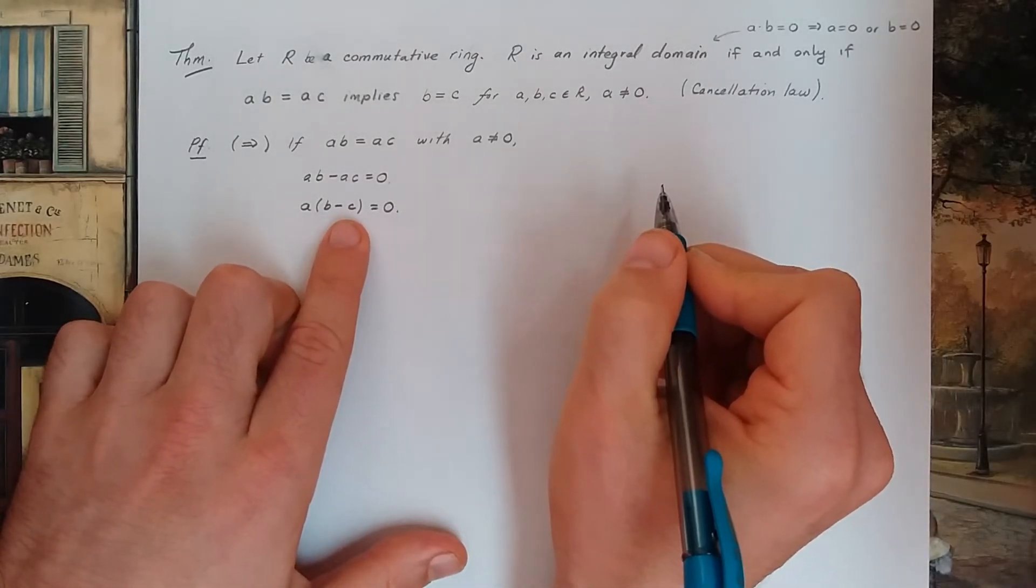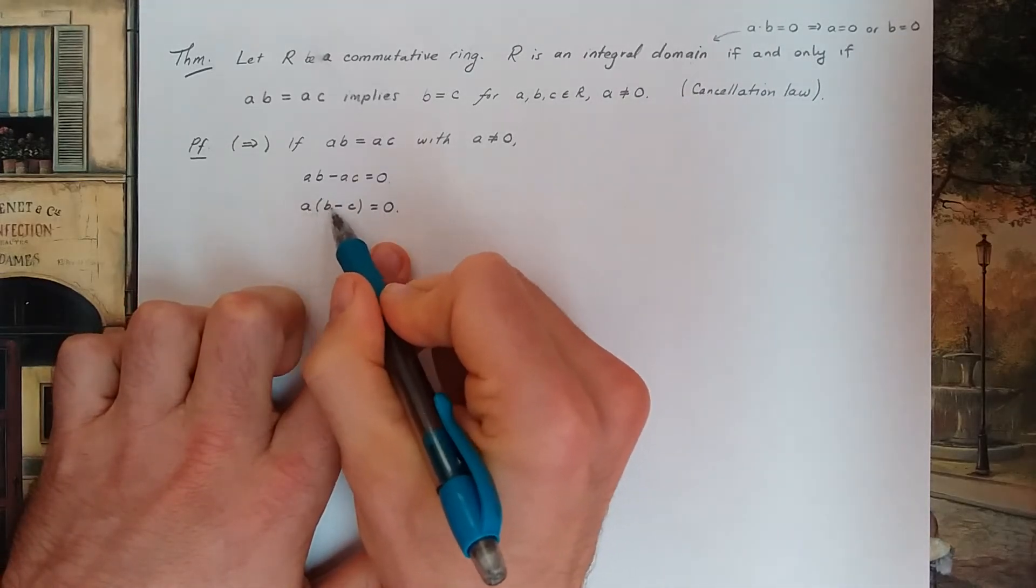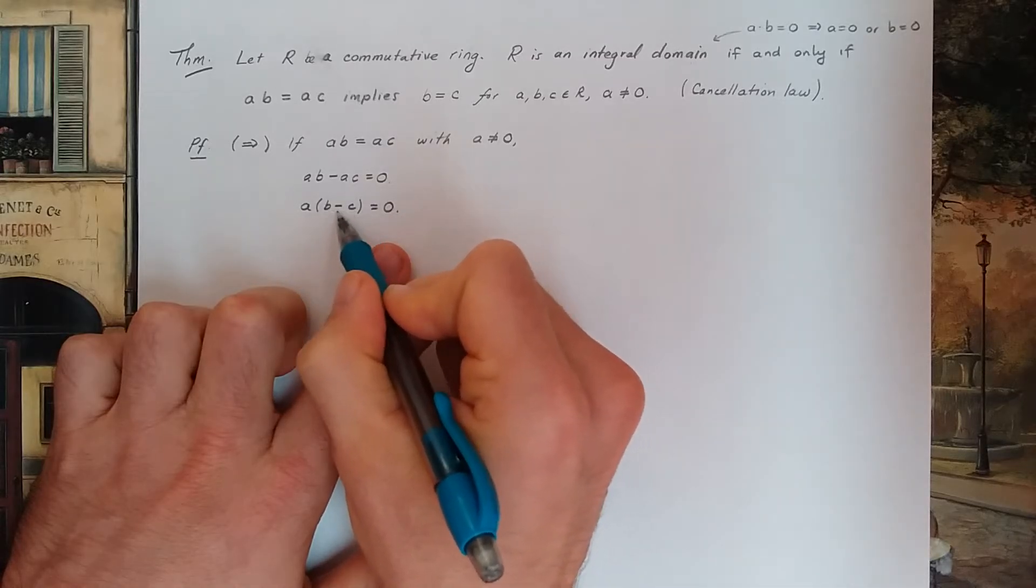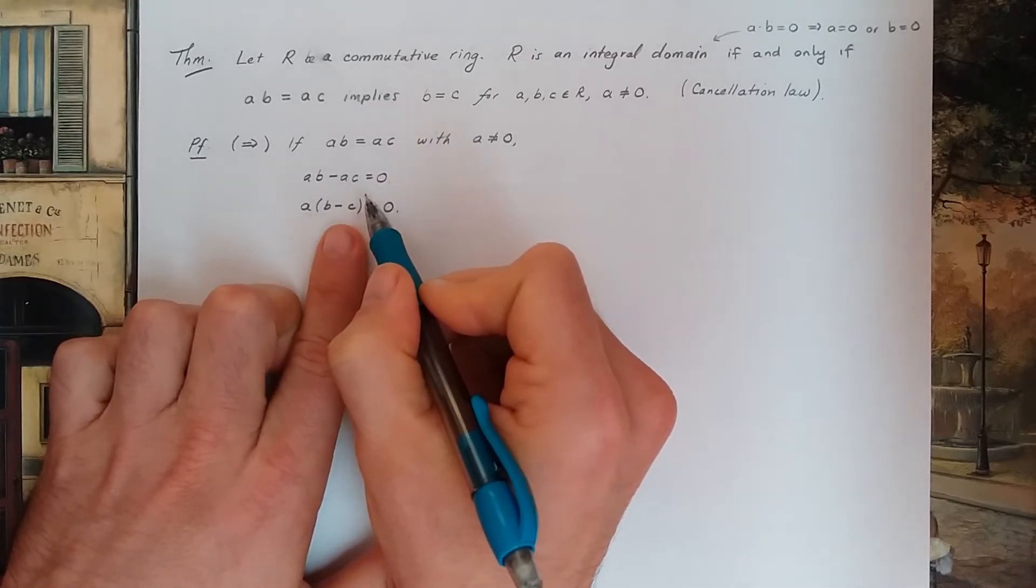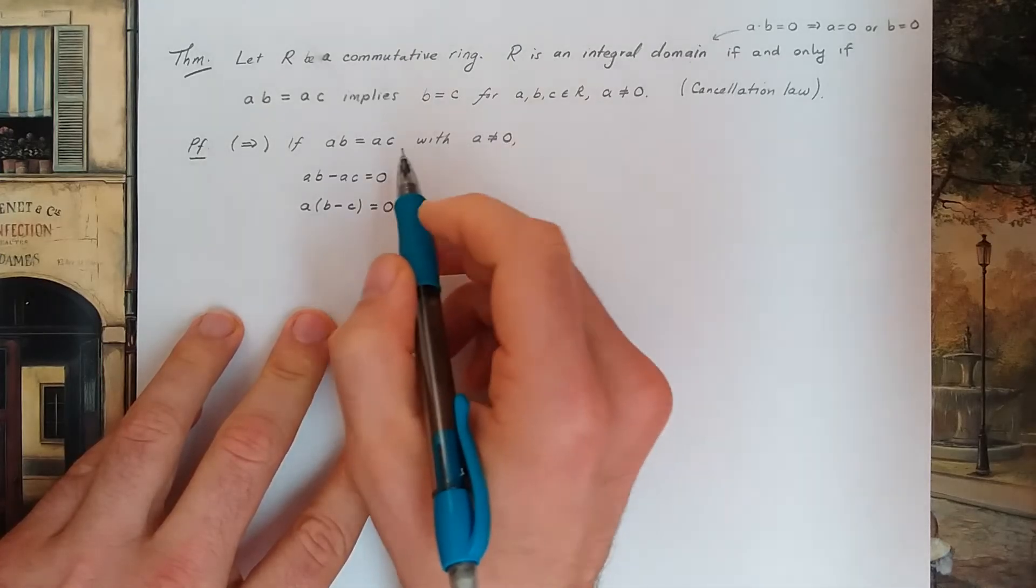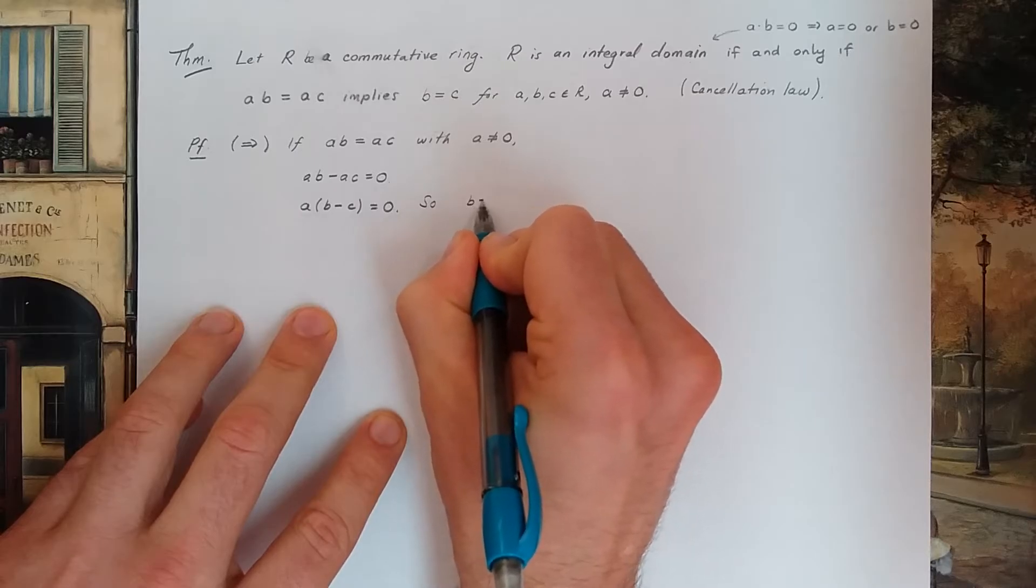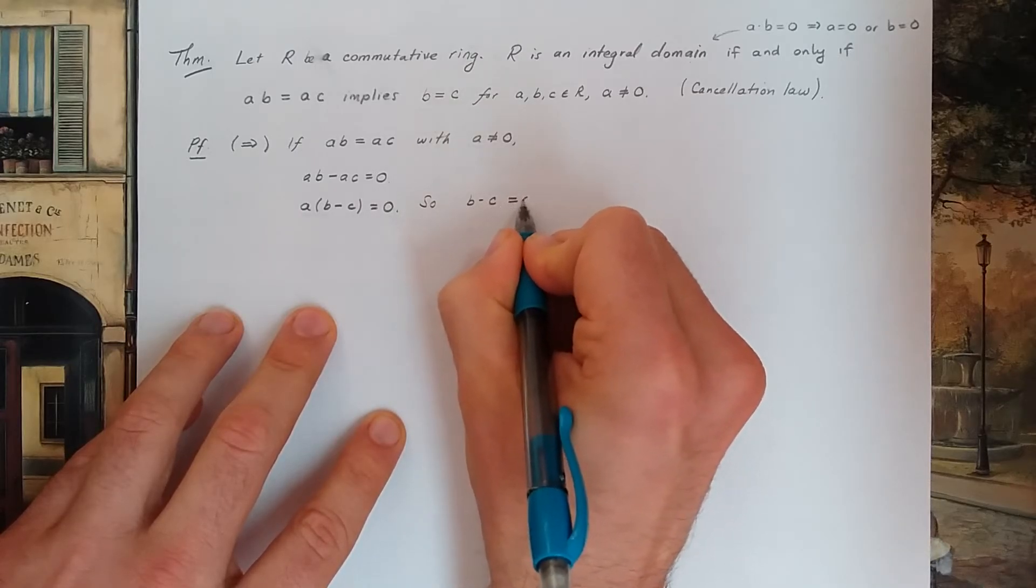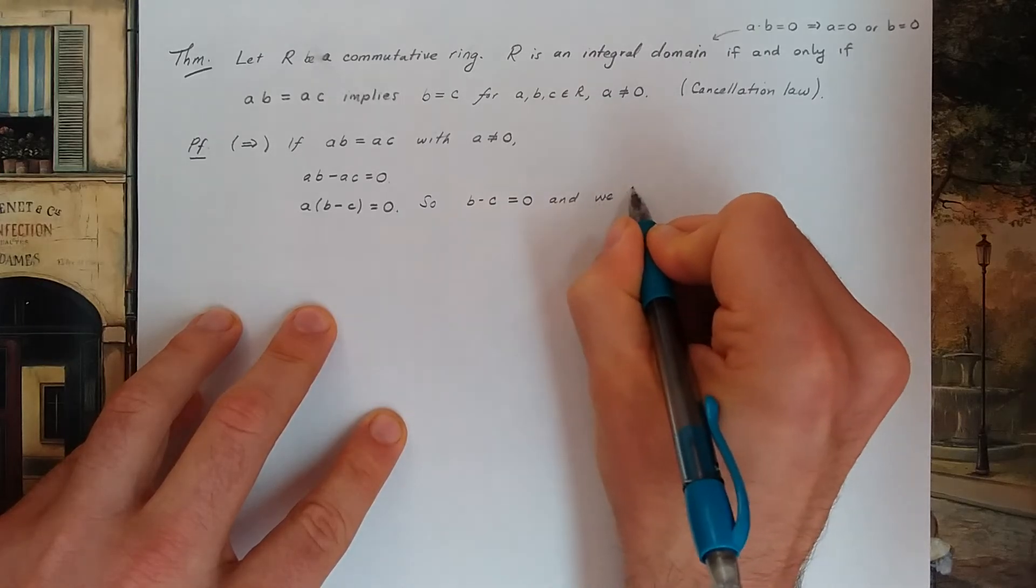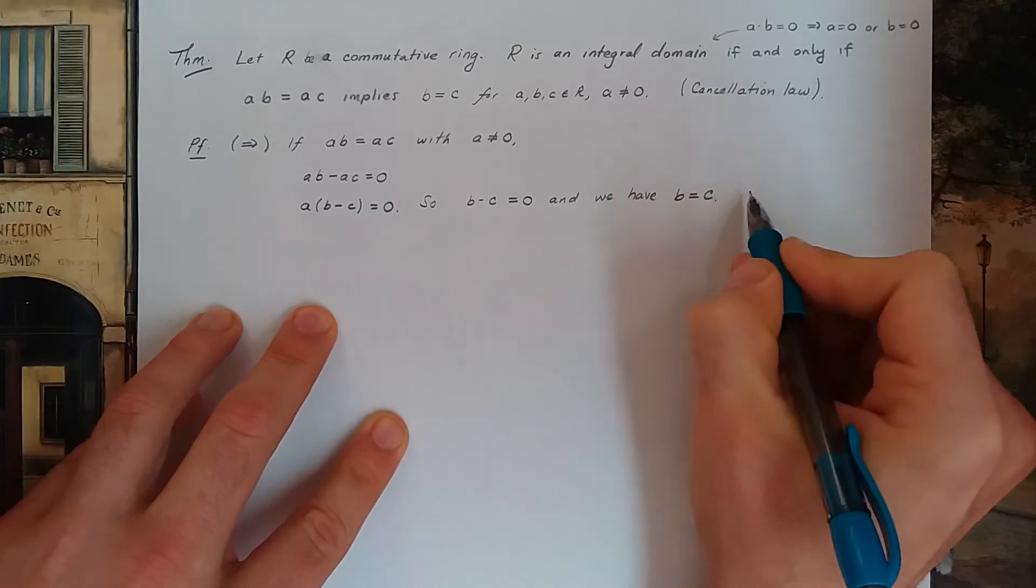That's true in any ring. But in an integral domain, if I have two things multiplied together that give me zero, then one of the numbers has to be zero. It's not a because we specifically said a is not zero. So the conclusion is that b minus c has to be zero, and we have b equals c, showing the cancellation law holds.